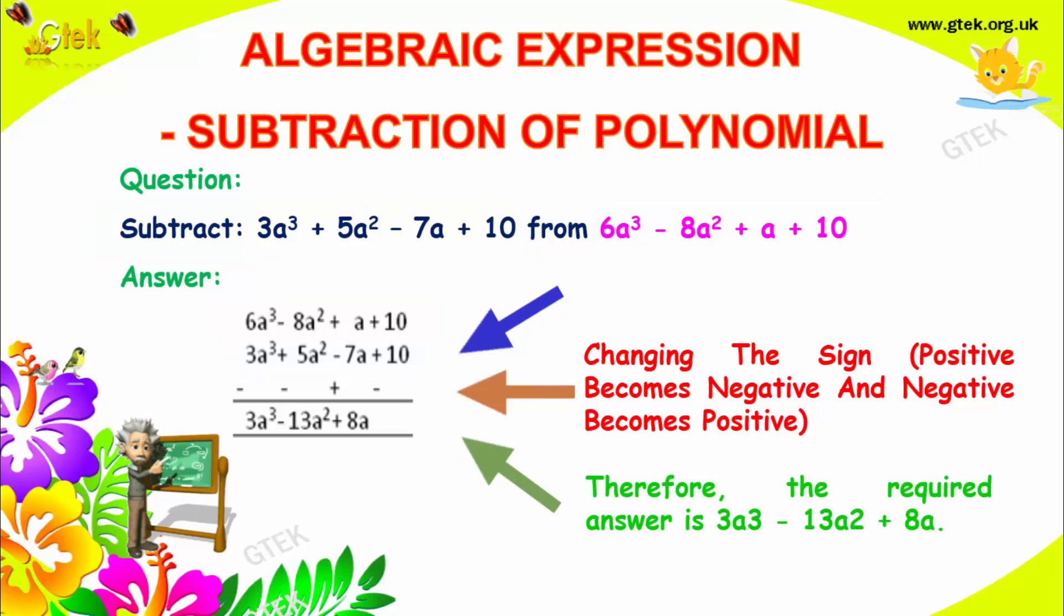Now, you got minus here. You got minus here, it will become plus. Plus here, it will become minus. Now, you have to arrange the terms. 3a cube, 6a cube in a single line. A square, a square in a single line. A and a in a single line. 10 and 10 numbers in single line.